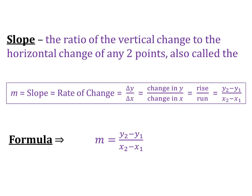As we know, slope is the ratio of the vertical change to the horizontal change of any two points. There are a lot of different ways to represent slope. We often see it listed as the letter M. Of course there's the word slope. It's also called rate of change.